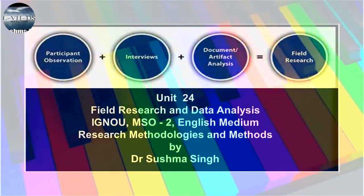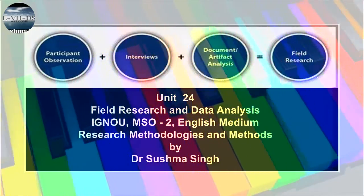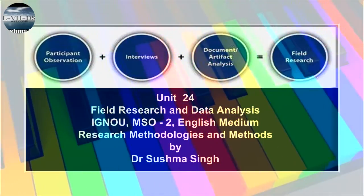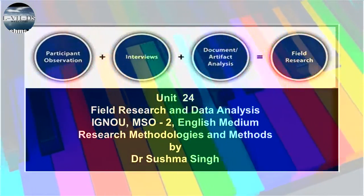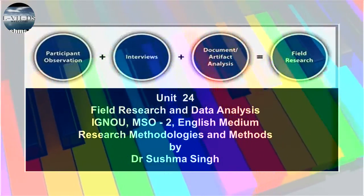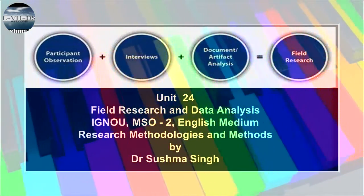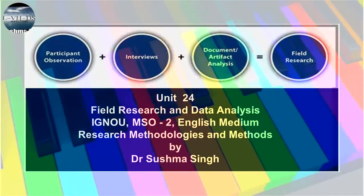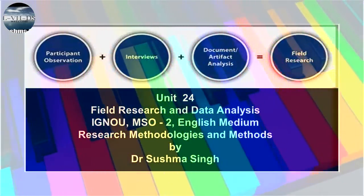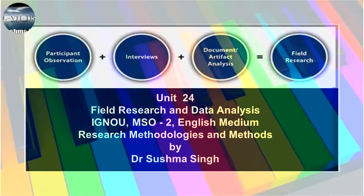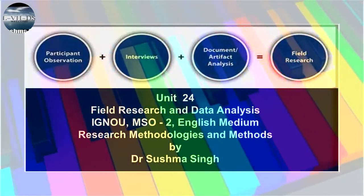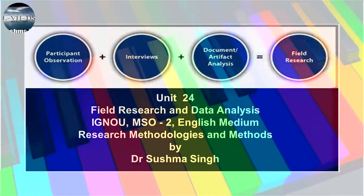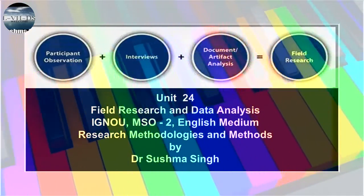Sometimes an existing role is utilized to explore the dimensions of a new setting or field in which the role naturally locates the observer. A good example is Cohen and Taylor's use of their role as part-time teachers to study prisoners and prison life. The strategy of observation in most roles can be covert or overt, and the researcher needs to have special skills in order to be successful.